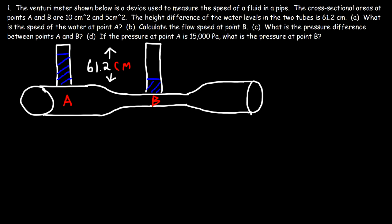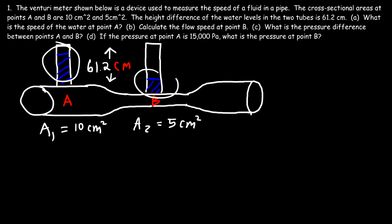In this video we're going to go over the Venturi meter. The Venturi meter shown below is a device used to measure the speed of a fluid in a pipe. The cross-sectional areas at points A and B are 10 square centimeters and 5 square centimeters, so A1 at point A is 10 and A2 at point B is 5 square centimeters. The height difference of the water levels in the two tubes is 61.2 centimeters. What is the speed of the water at point A?